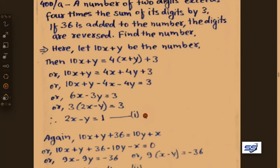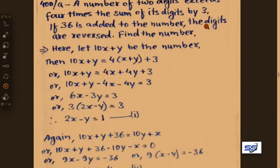From the second condition: if 36 is added to the number, 10x plus y plus 36, the digits are reversed meaning x and y are swapped, giving 10y plus x. So 10x plus y plus 36 equals 10y plus x.